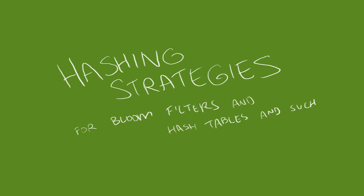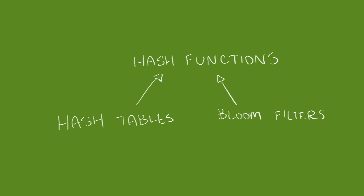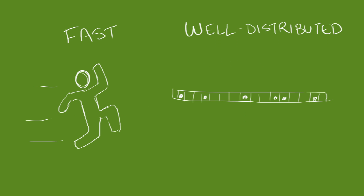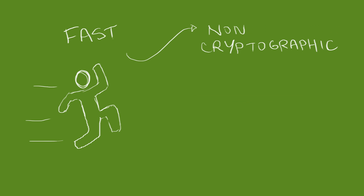In recent videos, I've talked about hash tables and bloom filters, both data structures that depend on hash functions. How do we choose these hash functions? The properties we're looking for in a hash are fast and well distributed. When we say fast, one of the things we mean is non-cryptographic.